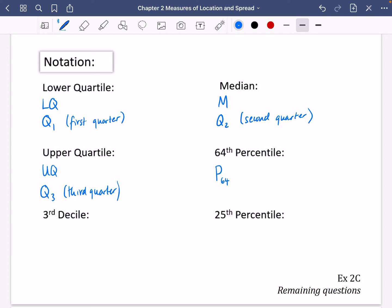Now the third decile, there's a few different ways we could write this. We could write it with a capital D with a little three to say that it's three tenths of the way along the data, or you could say that it's the 30th percentile, and that's because three tenths is the same as 30%.